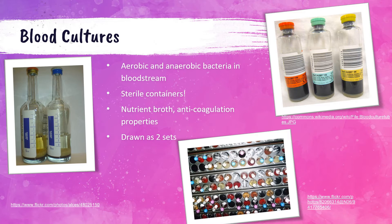Blood culture vials or bottles are used for the detection of aerobic and anaerobic bacteria growing in the patient's bloodstream — a condition called bacteremia or septicemia. These vials are sterile containers that contain anticoagulation properties to prevent the blood from clotting, as well as nutrient broth to encourage any bacteria present to grow. There is an aerobic and an anaerobic bottle, most often drawn as two sets. Aerobic bacteria like to grow in an oxygenated environment, whereas anaerobic bacteria either don't require oxygen or actually cannot grow in the presence of oxygen.